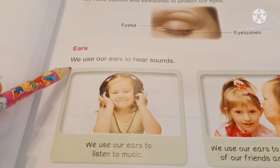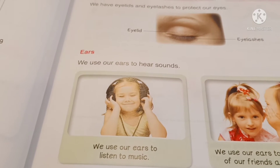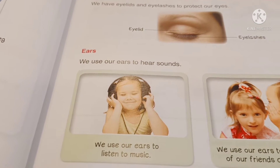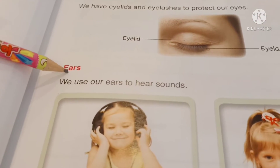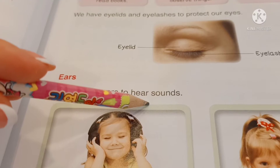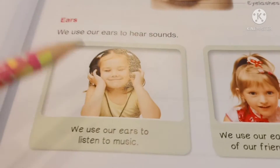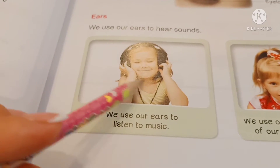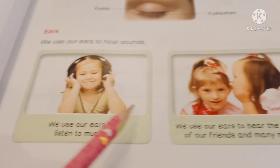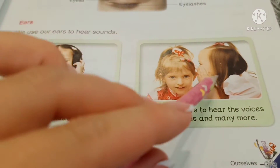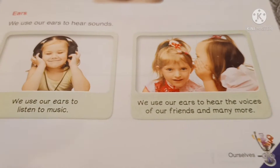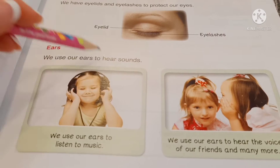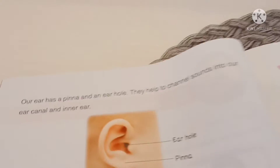What about ears? Do you remember in the song: when I use my ears, I can hear the birdies — birds. So, ears — we use our ears to hear, to hear sounds. For example, to listen to music or to hear the voices of our friends and many more. Ears are for hearing.